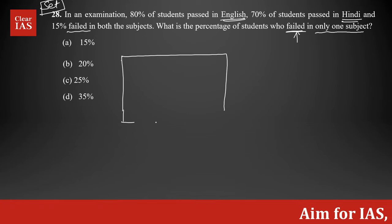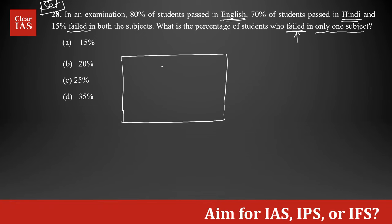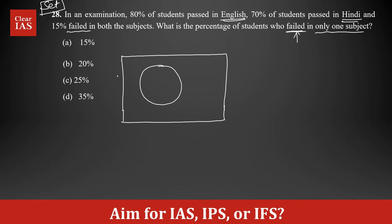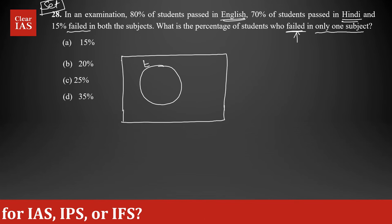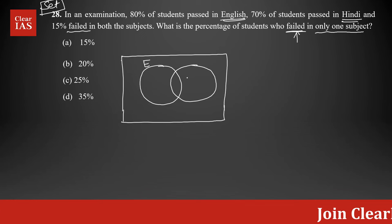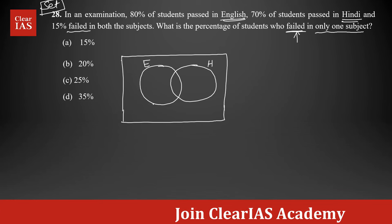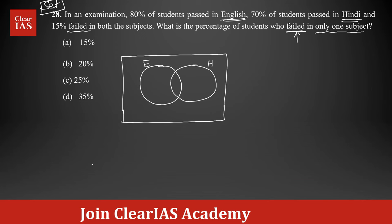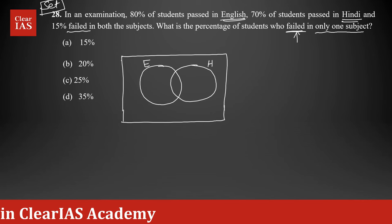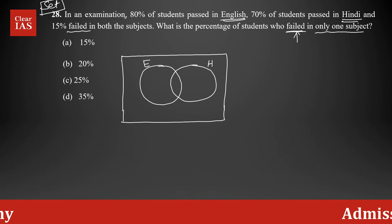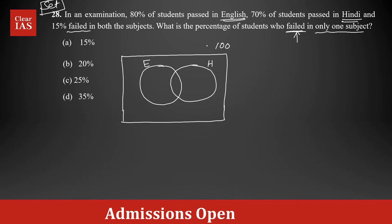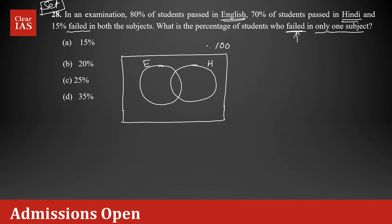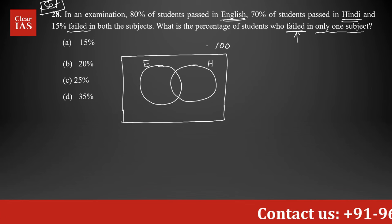I'm drawing the total box here, then drawing two sets — one represents the students who passed in English, and the second represents the students who passed in Hindi. Since it's given in percentages, it's always a good idea to start with total students as 100, so that it's easy to distribute the values in the Venn diagram.